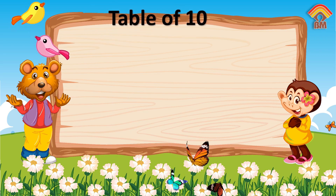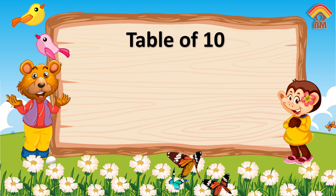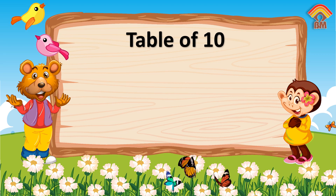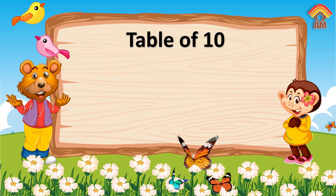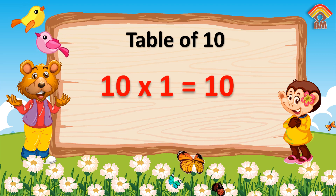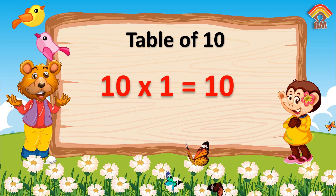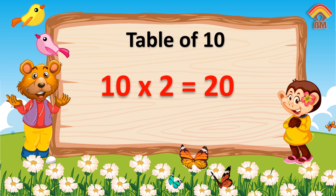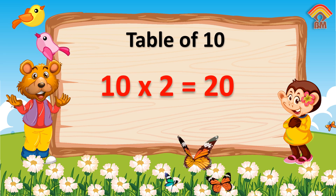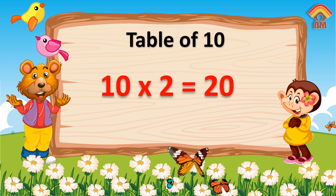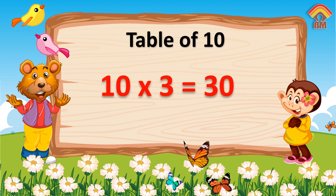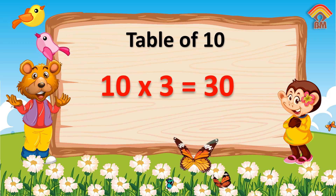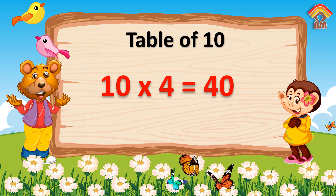Table of Ten. Ten ones are ten. Ten twos are twenty. Ten threes are thirty. Ten fours are forty.